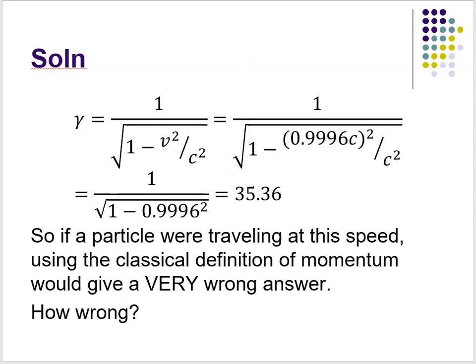Gamma equals 1 over the square root of 1 minus v²/c². If you're traveling at 99.96% of the speed of light, you write v = 0.9996c. Plugging into the equation for gamma, you get 1 over the square root of 1 minus (0.9996c)²/c². The c's cancel out — no need to multiply by 3 × 10⁸ on top and bottom — leaving 1 over the square root of 1 minus 0.9996². Solving that gives gamma equal to 35.36.